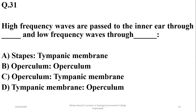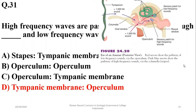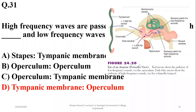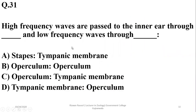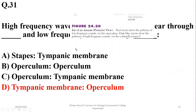High-frequency waves are passed to the inner ear through the tympanum, and low-frequency waves through the upper columella. High-frequency sounds travel via the tympanum through the stapes or columella to the inner ear, while low-frequency sounds move via the upper columella to the inner parts of the ear for further processing. So the right option is D — high-frequency waves pass through the tympanic membrane and low-frequency waves through the upper columella.